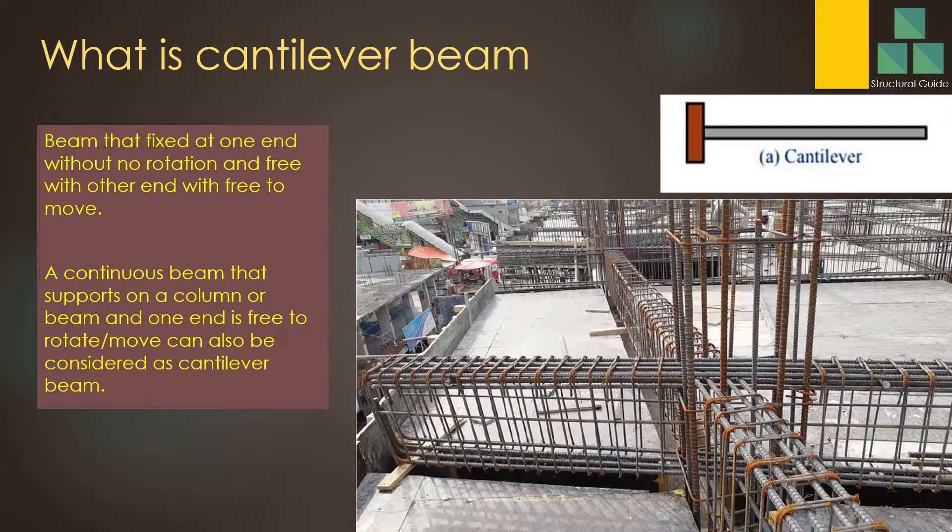What is a cantilever beam? A beam that is fixed at one end without rotation, and free to rotate at the other end is called a cantilever beam. Continuous beams can also be considered as a cantilever beam when it has one free edge. It starts from the free edge and then is supported by a column at the next edge.